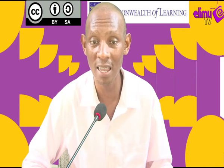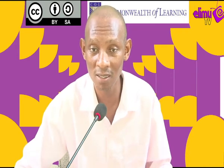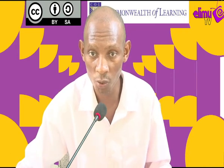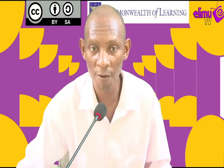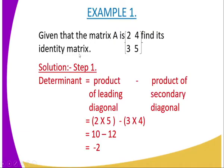Example one: given that matrix A is [[2, 4], [3, 5]], find its identity matrix. Step one — you are supposed to calculate the determinant of matrix A. The determinant equals the product of the leading diagonal minus the product of the secondary diagonal.